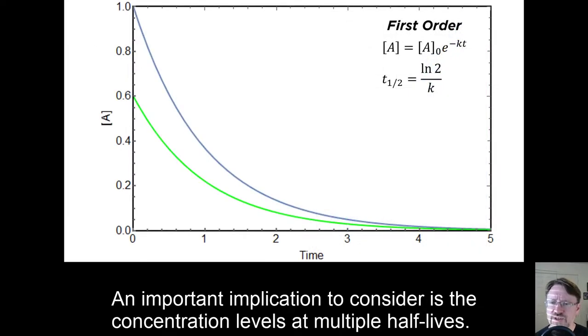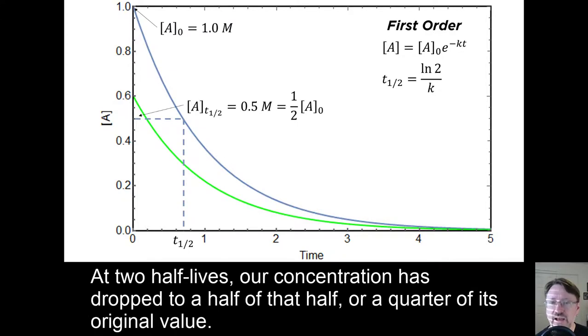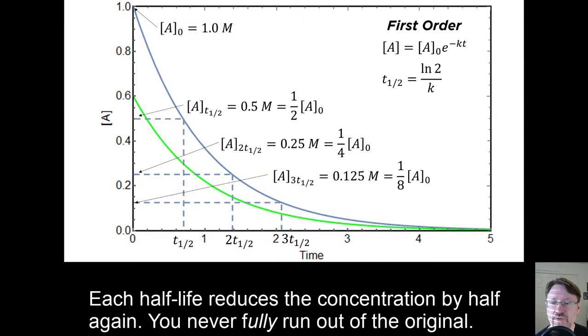The important implication to consider is the concentration levels at multiple half-lives. At one half-life, our concentration has dropped to half of its original value. At two half-lives, our concentration has dropped to half of that half, or a quarter, of its original value. At three half-lives, our concentration has dropped to half of that quarter, or one-eighth of its original value, and so on. Each half-life reduces the concentration by half again. You never fully run out of the original.